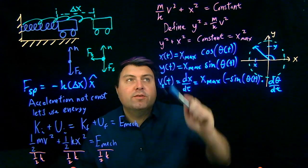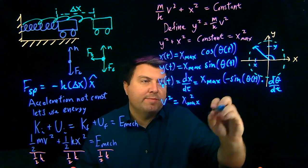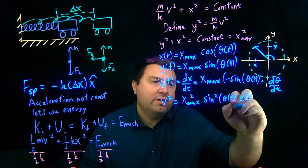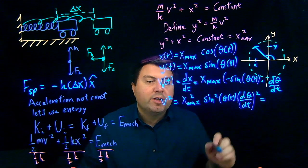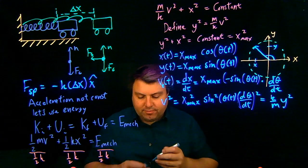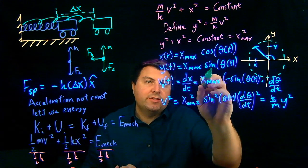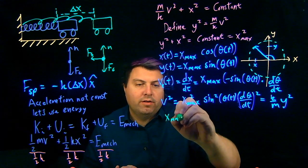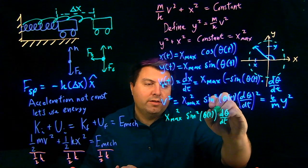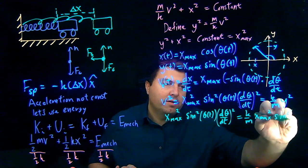But I already defined my v squared here, so I can write my v squared. This would be x max squared sine times negative sine to be sine squared theta of t, and then I'd have this d theta dt quantity squared. But that's equal to k over m, y squared. So, my k over m, y squared, well, I know my y of t is this, sine squared x max squared. So, I have x max squared sine squared theta of t times d theta dt quantity squared is equal to k over m, x max squared sine squared theta of t.